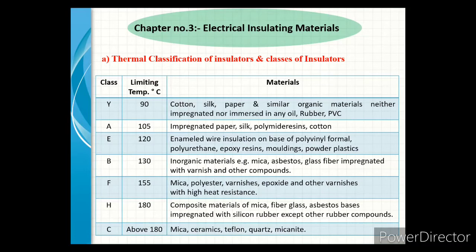Class A has a limiting temperature range of 105°C. Materials included are impregnated paper, silk, and cotton. Class E has a limiting temperature range of 120°C. Materials included are enamel wire insulation based on polyvinyl formal, epoxy resins, moulding powder, and plastics.